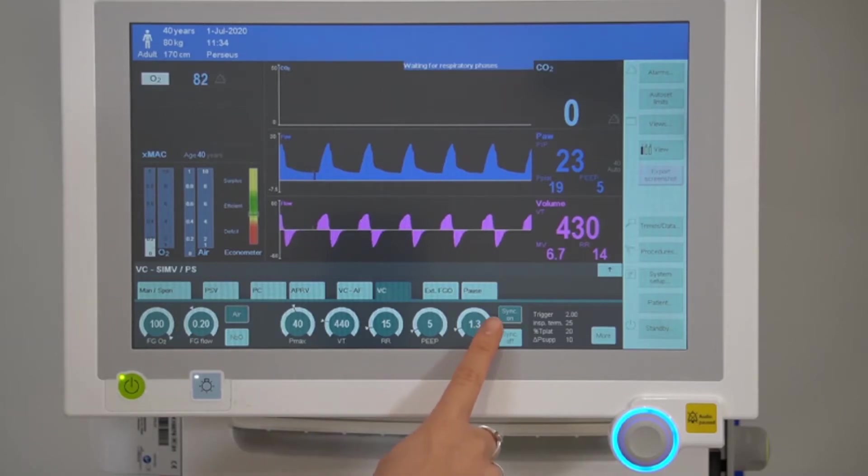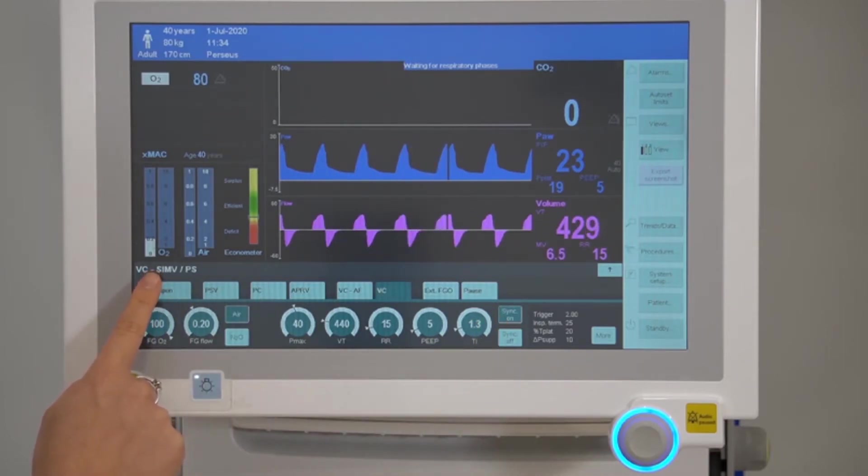There is the option to synchronize SIMV so that the machine breaths are adapted to the spontaneous breathing of the patient. You can tell that it is active as it is dark green in color and it is confirmed in the headline bar.